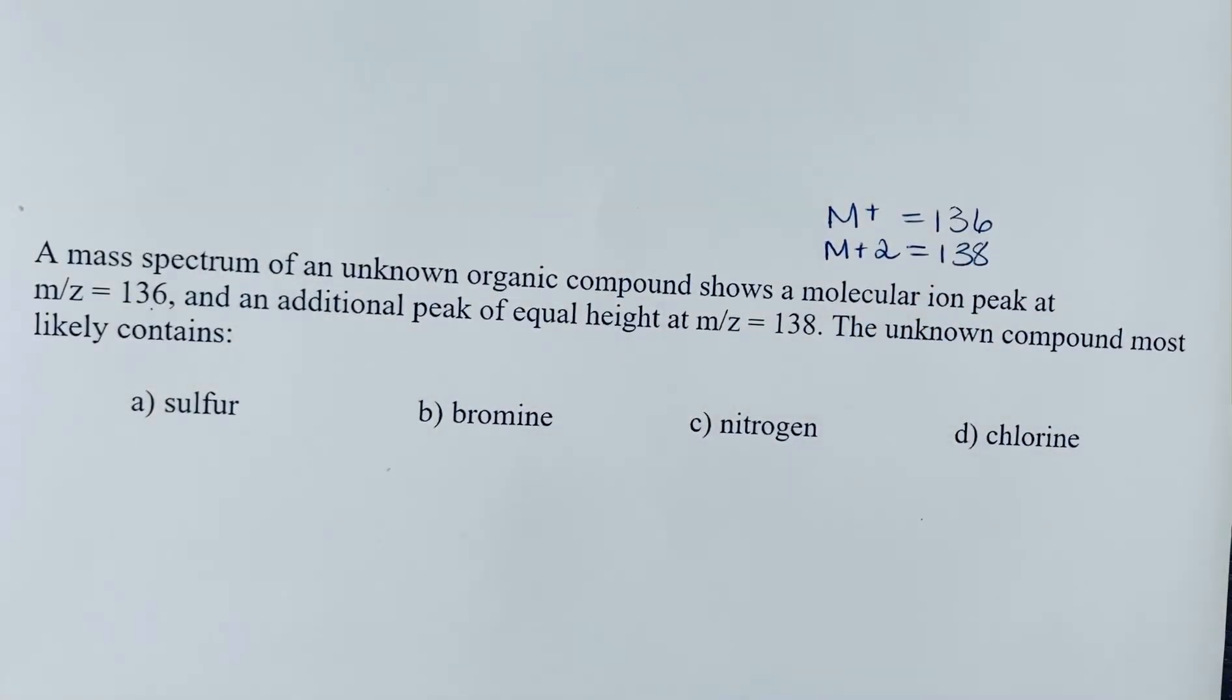These M+2 peaks are a way to identify two prominent halogens. Both chlorine and bromine have two isotopes that occur in a fair amount of abundance, so we see them in the mass spectrum.